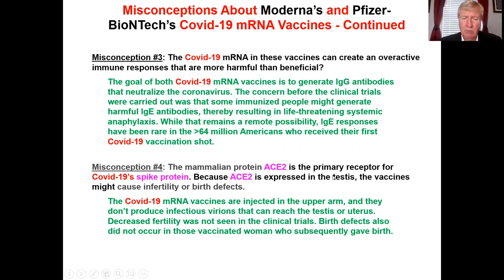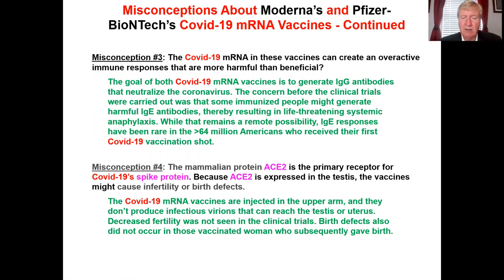The fourth misconception: ACE2 is expressed in the testes, so people were concerned that the vaccines might cause infertility or birth defects. Well, that can't occur. First, the COVID-19 vaccine is not injected into the testes or the uterus — it's injected in the upper arm. These mRNA vaccines do not produce infectious viral particles that can move to any part of the organ. More importantly, decreased fertility was not seen in the clinical trials, and birth defects also did not occur in vaccinated women who subsequently gave birth.